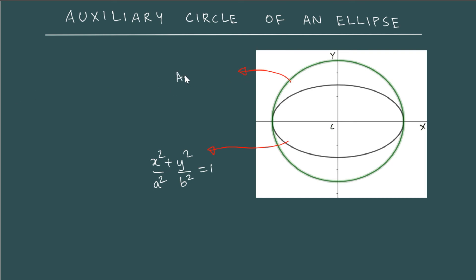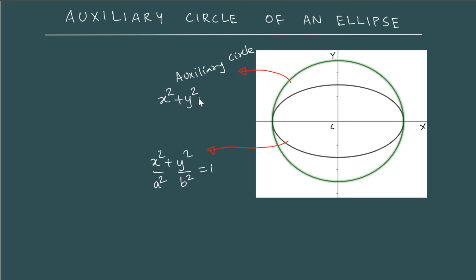This is our auxiliary circle. And the center is (0, 0). So the equation of the auxiliary circle is x² + y² = a².